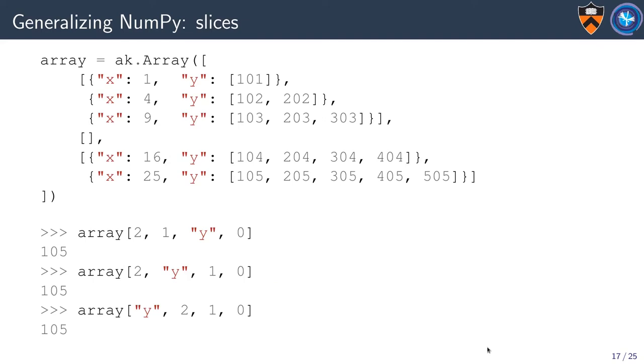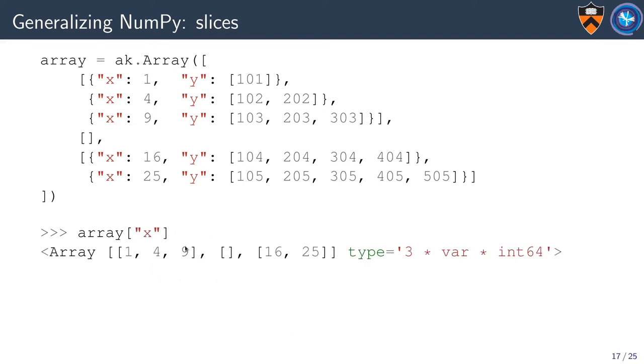We generalize NumPy slices. Particularly if you have a NumPy structured array, you can have string-valued slices to pick out columns and integers or arrays or slice objects to pick out rows. Another feature that structured arrays have is that you can do the column slicing or the row slicing in either order. Same thing is true here. It introduces some commutativity between the column slicing and the row slicing. If you have records inside of some structure such as this jagged array, slicing by only the record field can give you a new jagged array of just the inner contents.